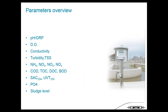We have a long list of measurable parameters: pH, ORP, dissolved oxygen (DO), conductivity, turbidity, suspended solids, nitrogen parameters including ammonium, nitrate, and NOx, carbon parameters like COD, TOC, DOC, and BOD, single wavelength absorption — SAC at 254 nanometers or UVT (spectral absorption or UV transmission). We can also measure phosphate and sludge level.